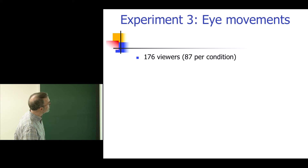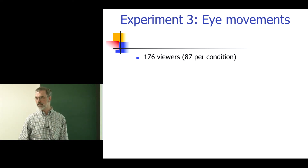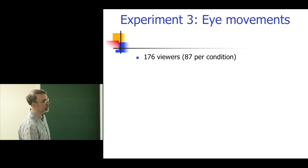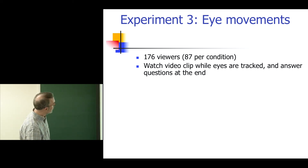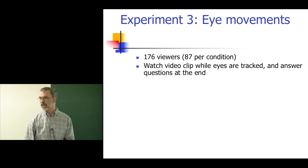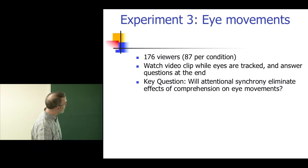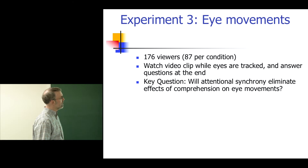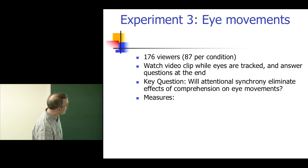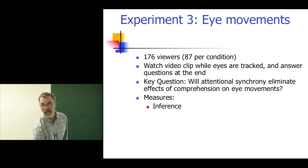Let me tell you about the eye movements. We had 176 people watching the clip — 87 people in each condition — while their eyes were tracked. At the end we asked them questions like, what do you think will happen next? Our key measure was the inference: did they mention the guy falling on the circus tent, yes or no?